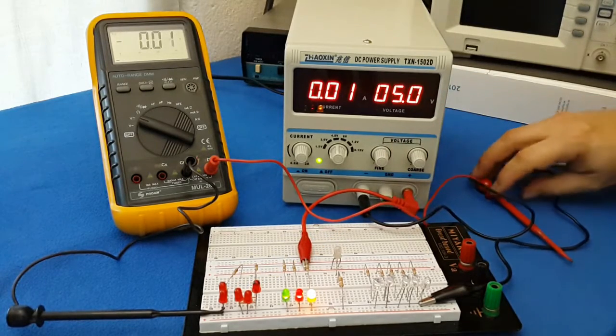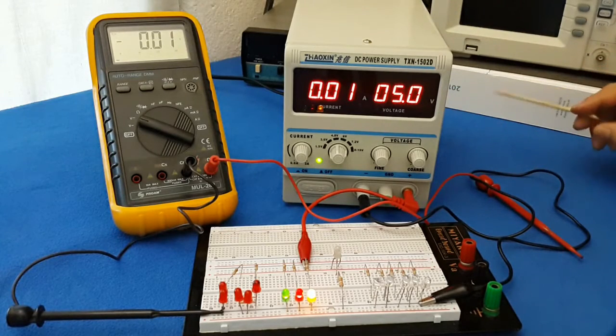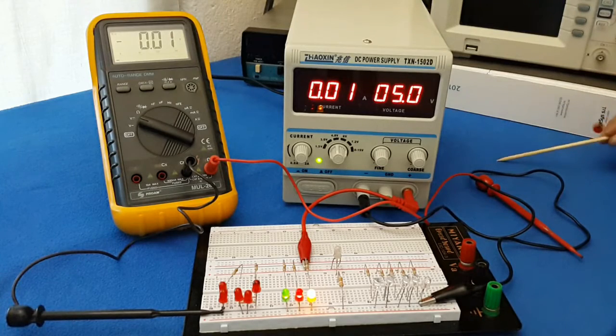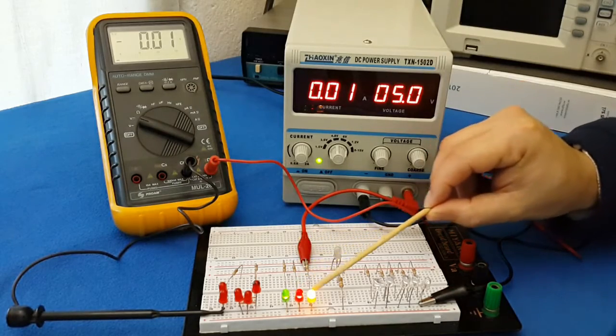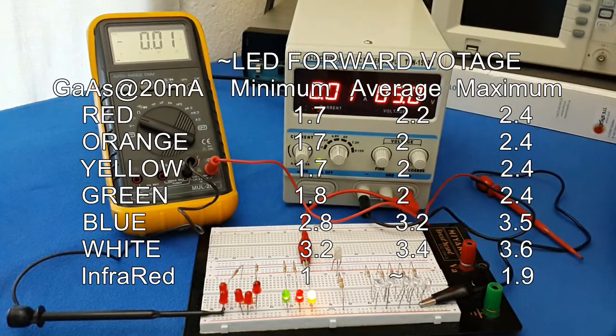Let's learn a little bit about it. The most important thing we need to know is the forward voltage, the voltage that drops on the LED when we polarize it the right way. Typically for the normal regular LEDs, minimum 1.7, typical 2 volts, maximum 2.2, 2.4.